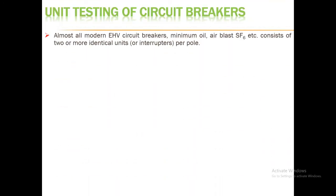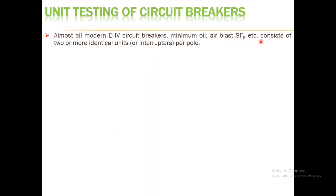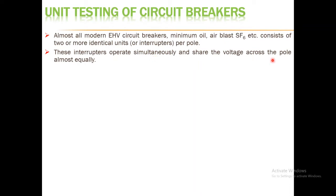Unit testing of a circuit breaker is normally performed on the circuit breaker at the unit level. Almost all modern extra high voltage circuit breakers — minimum oil circuit breakers, air blast circuit breakers, and SF6 circuit breakers — consist of two or more identical units or interrupters per pole. In unit testing, these circuit breakers can be tested by stressing their identical units or interrupters available per pole. These interrupters operate simultaneously and share the voltage across the pole almost equally.